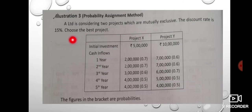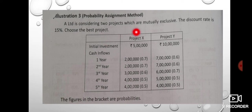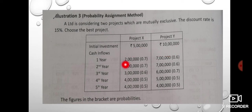Probability Assignment Method question: A company is considering two mutually exclusive projects. The discount rate is 15%. Choose the best project. Project X has an initial investment of $5.0 and Project Y has an initial investment of $10.0. Cash flows are given for years 1 through 5.